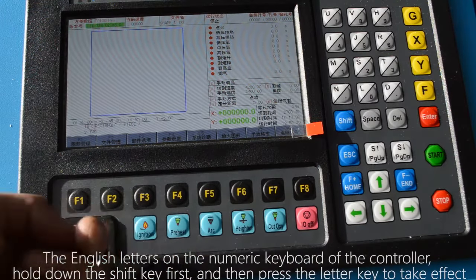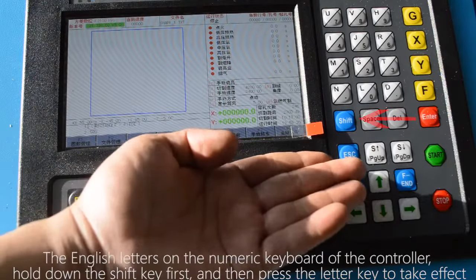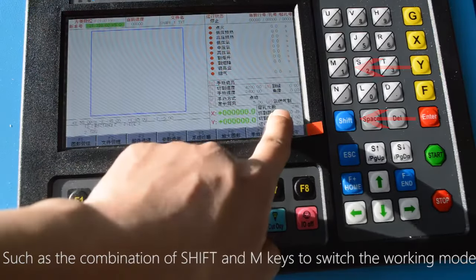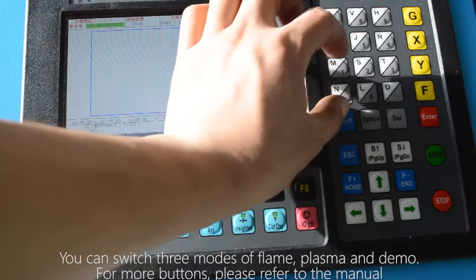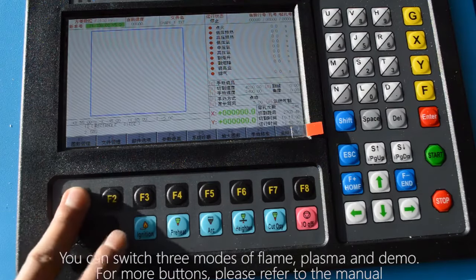The English letters on the numeric keyboard of the controller hold down the shift key first and then press the letter key to take effect such as the combination of shift and M keys to switch the working mode. You can switch three modes of flame, plasma and demo. For more buttons, please refer to the manual.